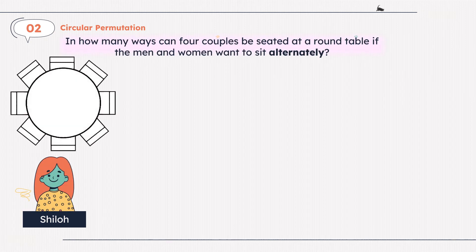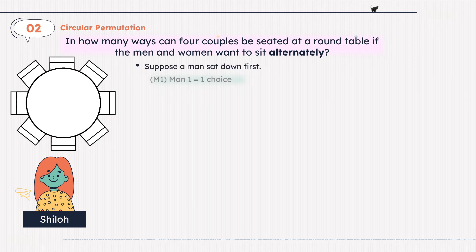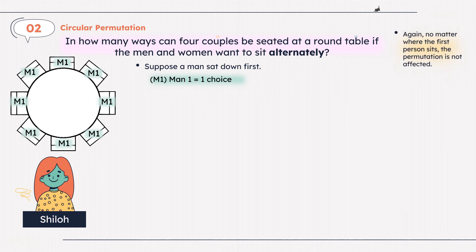In how many ways can 4 couples be seated at a round table if the men and women want to sit alternately? Suppose a man sat down first. He will only have 1 seat of choice, because there are 8 seats and he is only 1 man. Therefore, he can sit in whatever he wants, because again, no matter where the first person sits, the permutation is not affected. So he can sit in the bottom seat, the left seat, top right seat, whatever. For now, let's say man 1 sat on the top seat.